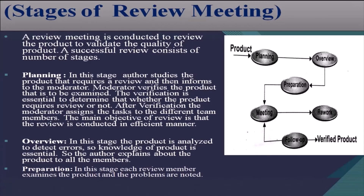The next stage is the overview stage. In this stage the product is analyzed to detect errors, so knowledge of the product is essential. The author explains about the product to all the members. The next stage is the preparation stage. In this stage, each review member examines the product and problems are noted.